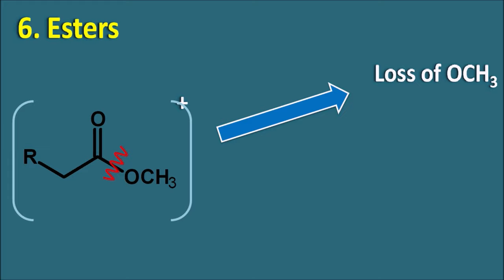Next one is alkenes. Alkenes form a molecular ion that undergoes fragmentation to release a neutral alkyl fragment, giving a fragment that is the allyl cation, which is highly stable. The m/z value of the allyl cation: CH2 is 14, another CH2 is 14 (total 28), and one CH is 13. So 28 plus 13 gives m/z 41. At m/z 41 we can observe a peak because of the allyl cation.